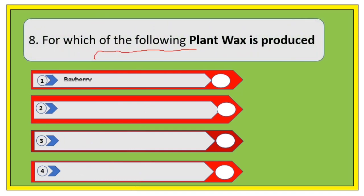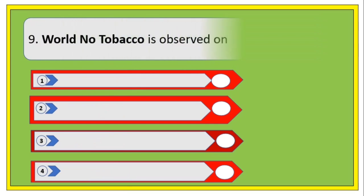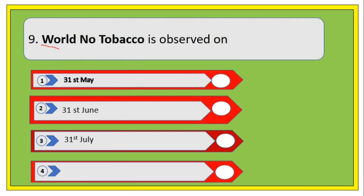For which of the following plants is wax produced? Options are Bavari, Cinchona, Pine, and Jackfruit. The right answer is Bavari. This is an important question — note it down.